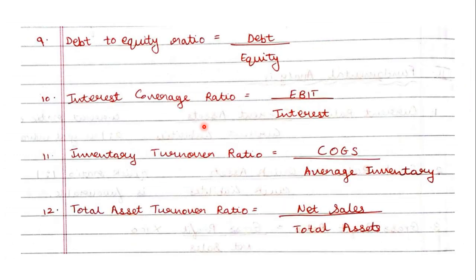Next set: debt to equity ratio — the formula is debt upon equity. Next is interest coverage ratio — that is EBIT upon interest.